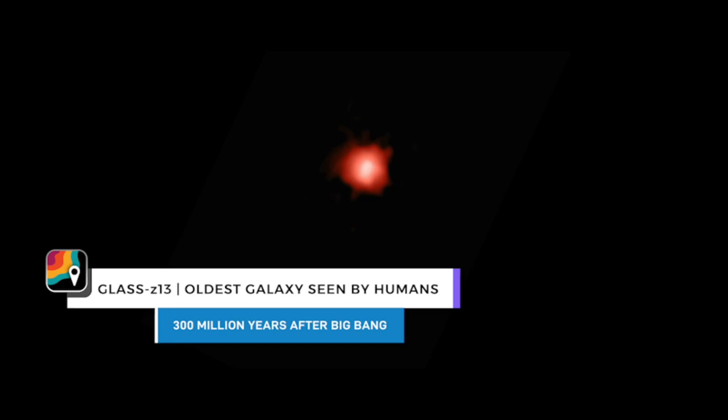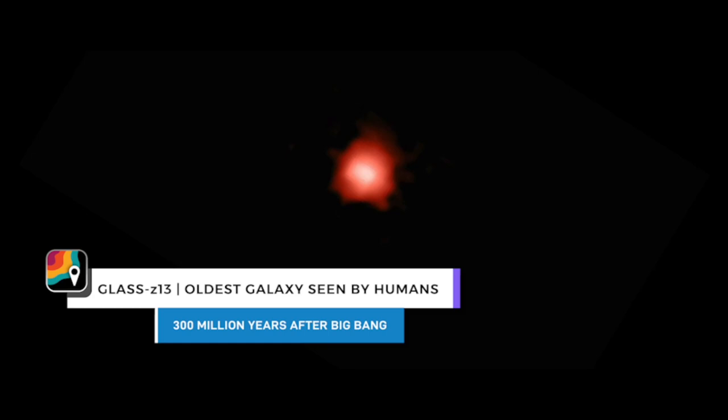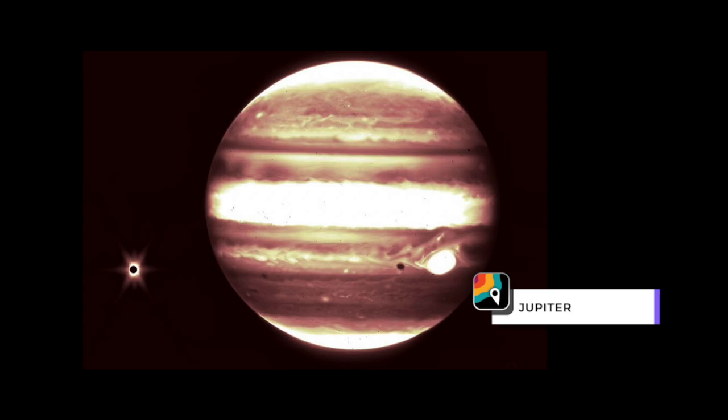This picture is the oldest galaxy seen by humans. It is one of the latest images from the Webb Space Telescope. Scientists say this image shows the galaxy called Glass Z13 as it looked just 300 million years after the Big Bang.